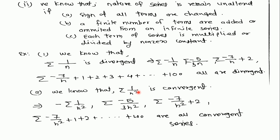See another example: if we have the series 1/N², which is a convergent series. If we change the sign, the series is still convergent. If we multiply by some finite number, it is also convergent. If we add or subtract any finite quantity, the series remains convergent. And if we add a finite number of terms, this is also a convergent series.